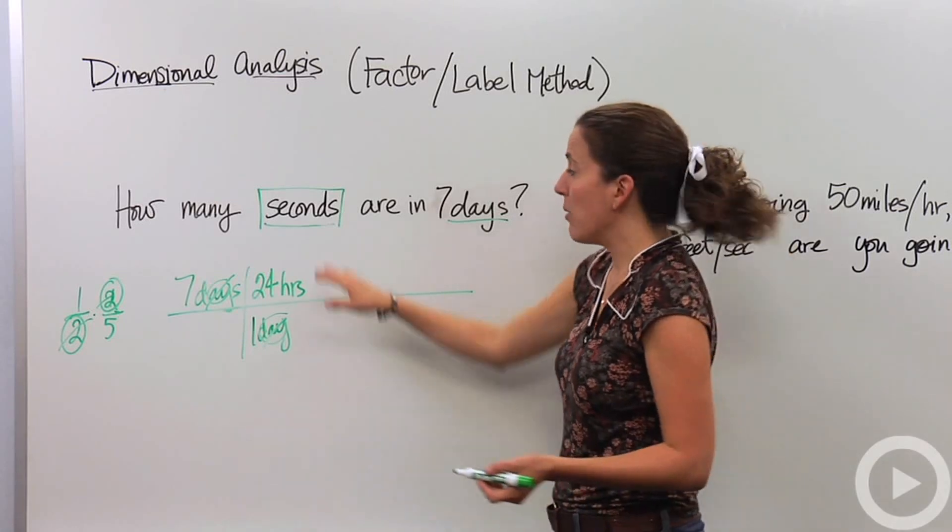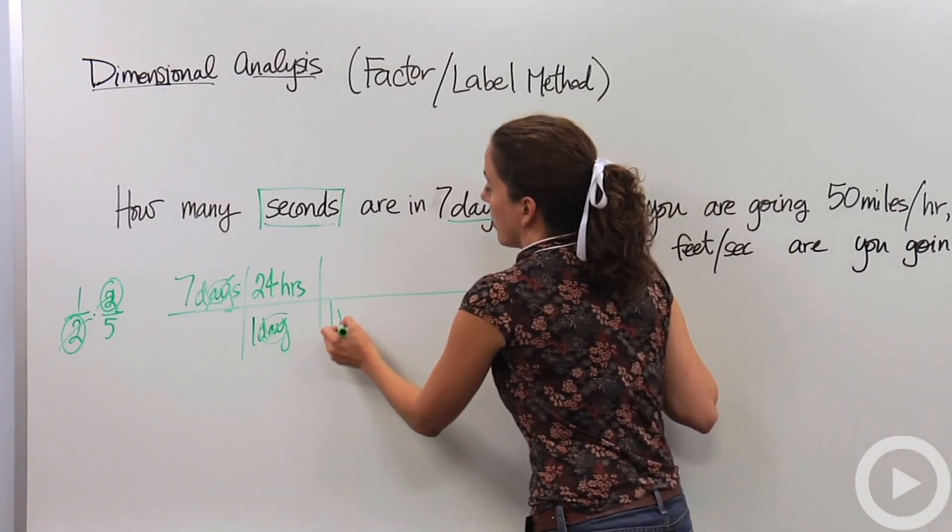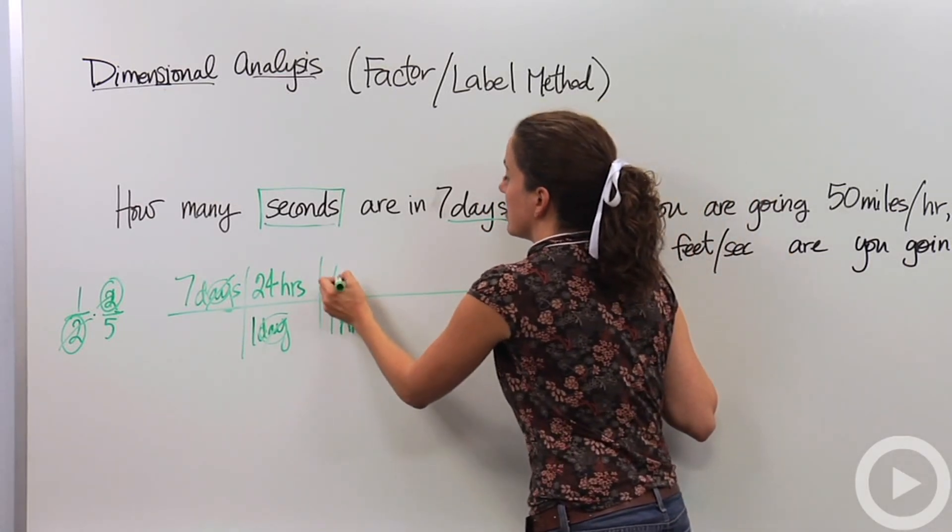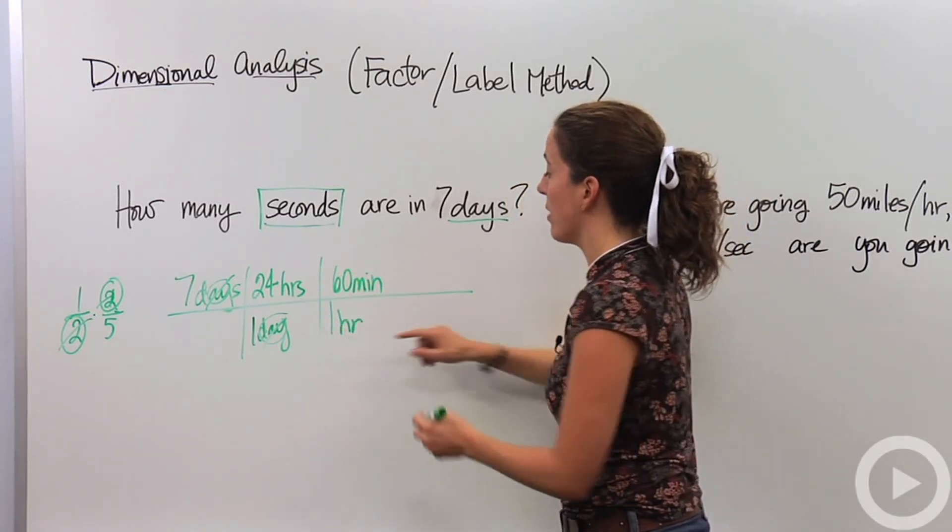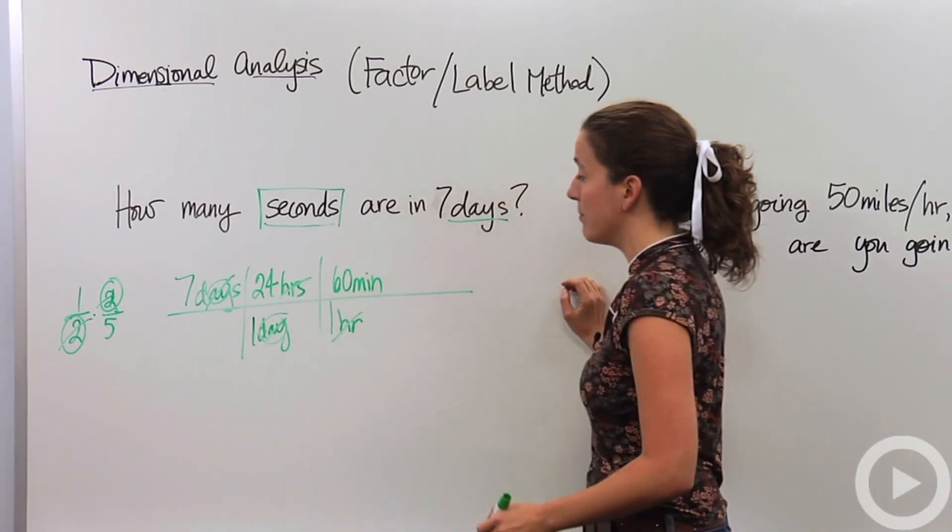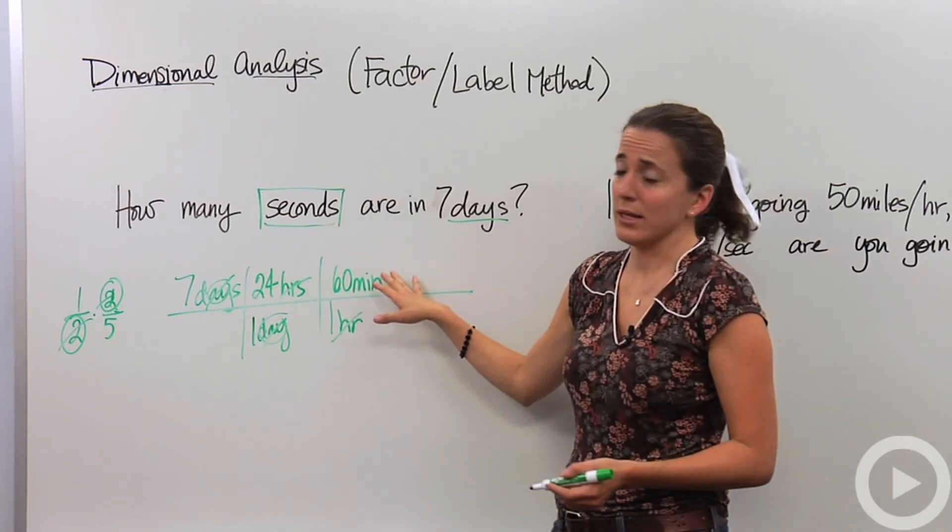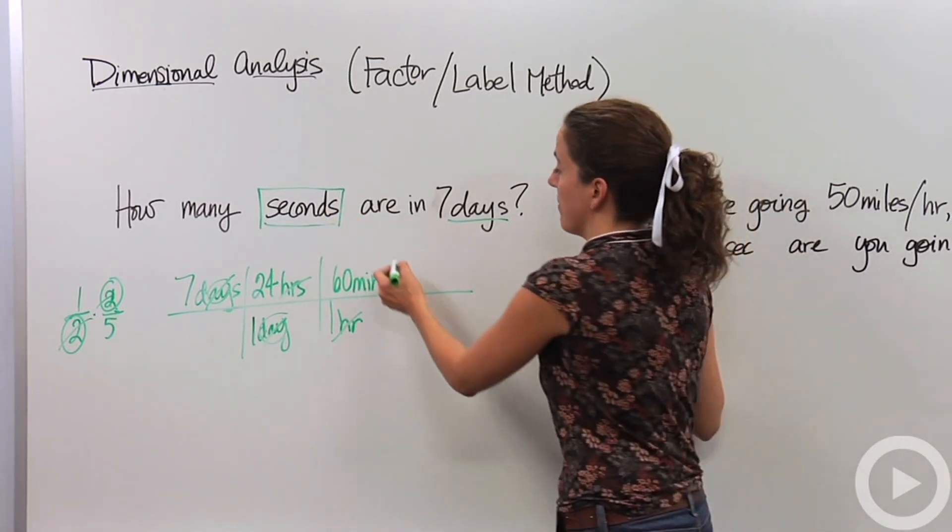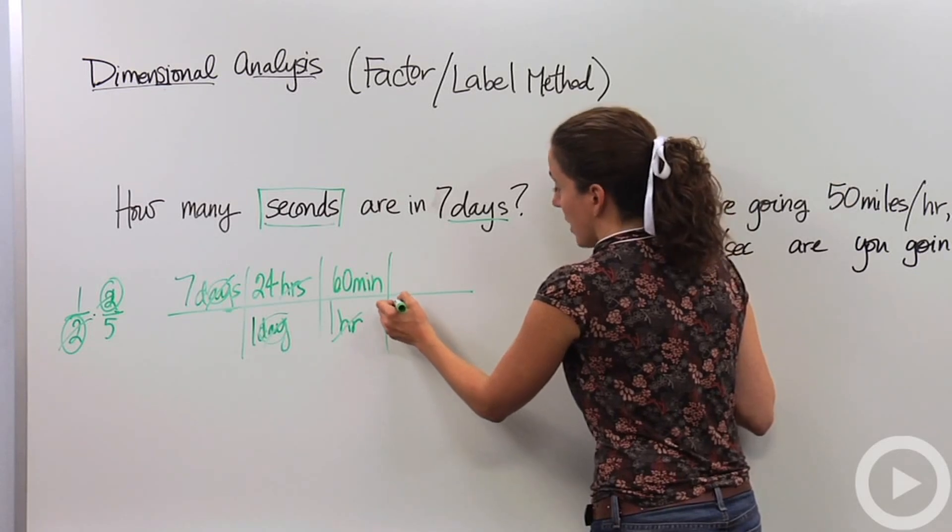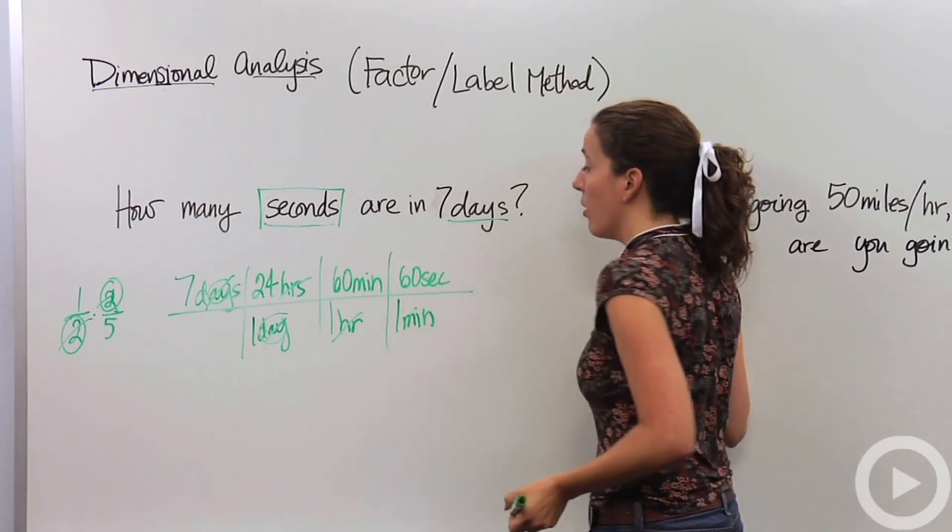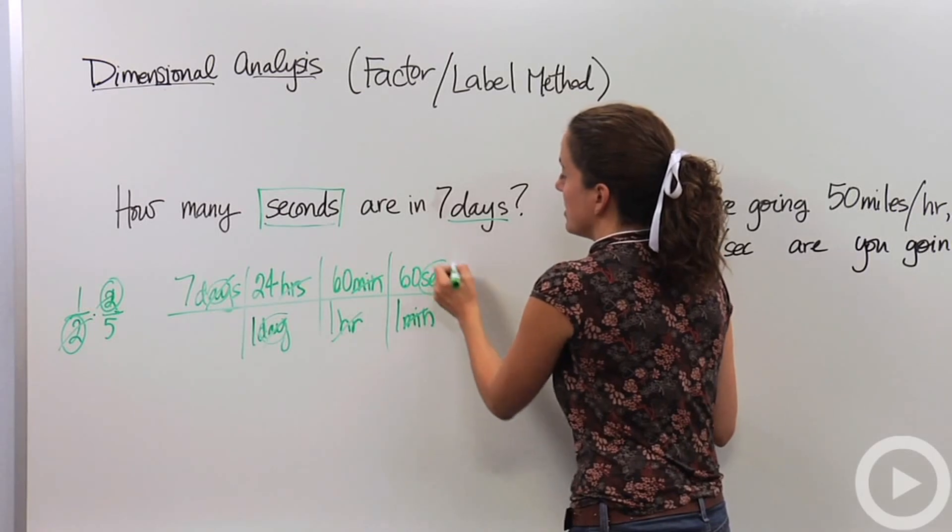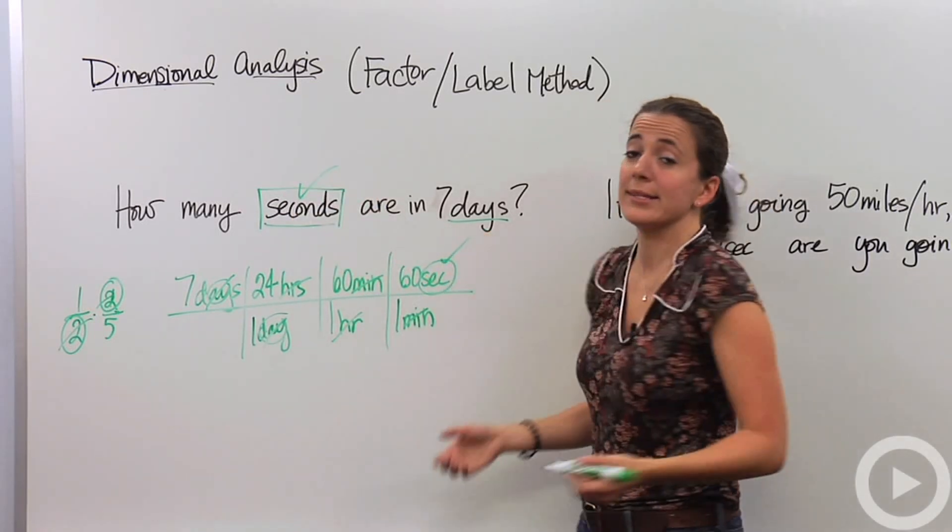But I don't want hours. I want seconds. So I'm going to keep going. In one hour, I also know that there are 60 minutes. So now I have hours in the numerator and hours in the denominator so I can cross those guys out as well. But again, I don't want minutes. I want seconds. So I've got to keep going. So I'm going to say, okay, in one minute, I know that there are 60 seconds. These minutes cross out and I'm left with seconds, which is exactly what I wanted. So now I can stop. Awesome.